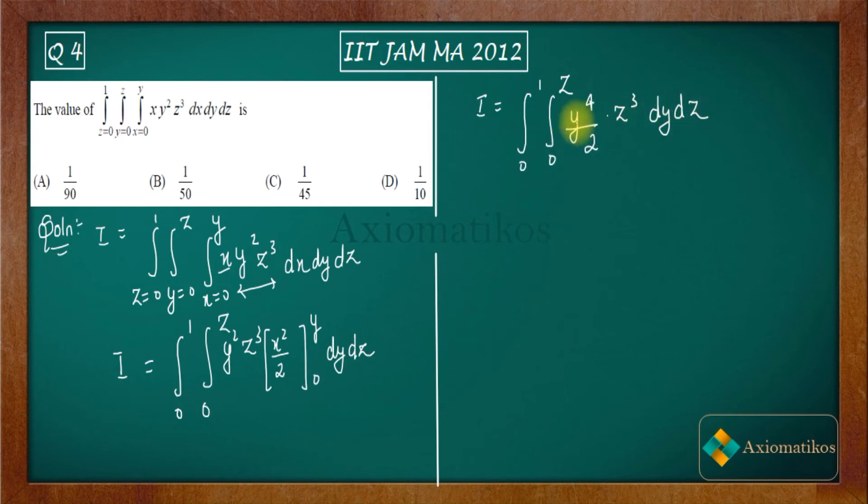Now just integrate this y⁴ part. You know the integration of y⁴ is y⁵ by 5. So you will end up with y⁵ by 10, from 0 to z, times z³ dz.